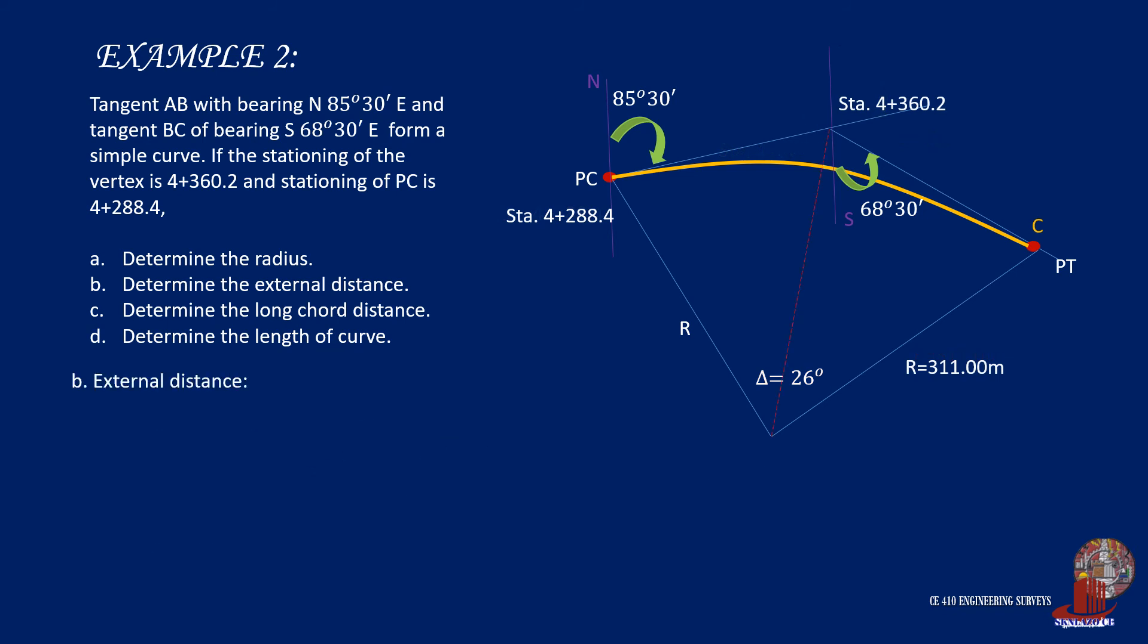The next requirement is external distance. As long as the radius of curvature and central angle are known, the other elements are easy to solve. From the formula E equals R secant of half of delta minus 1, E is computed as 8.18 meters.